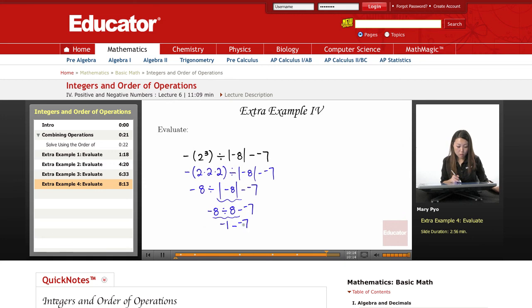I'm subtracting integers, so I'm going to apply the 2 dash rule. Make this a plus. And make that a plus. So negative 1 plus a 7 here.